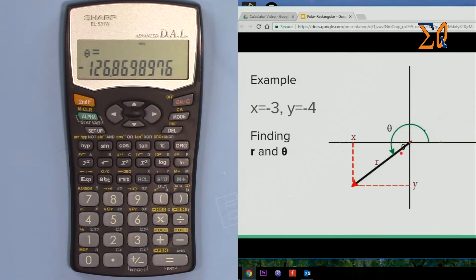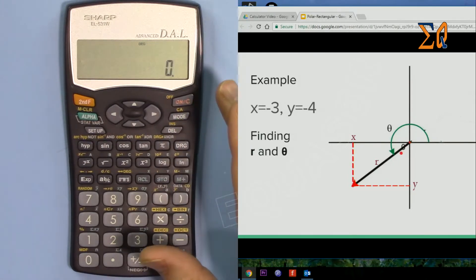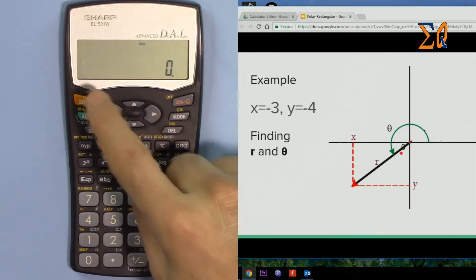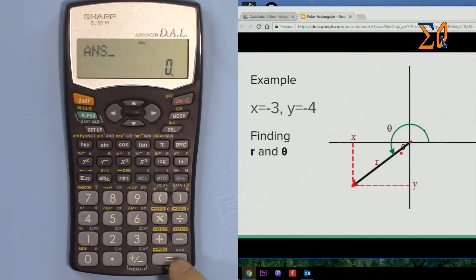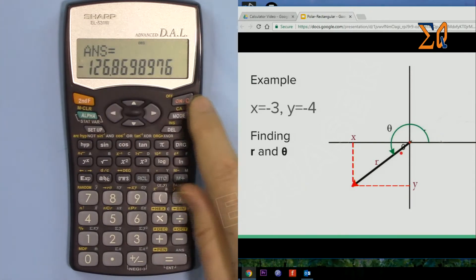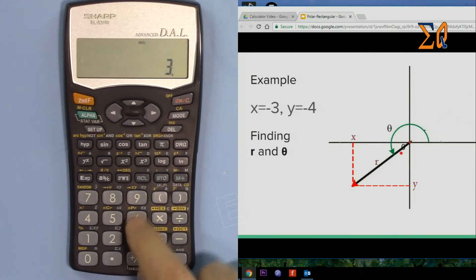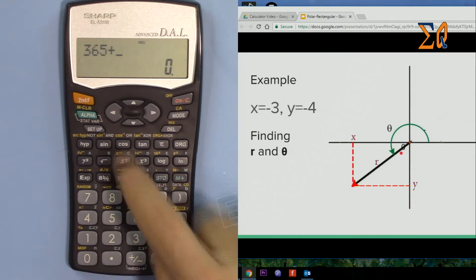Now to get the actual value, I'm pressing clear. The last answer is always in the ANS. Press alpha answer, so the value is already here. So just put 365 plus alpha answer, and it will give you 238 degrees.